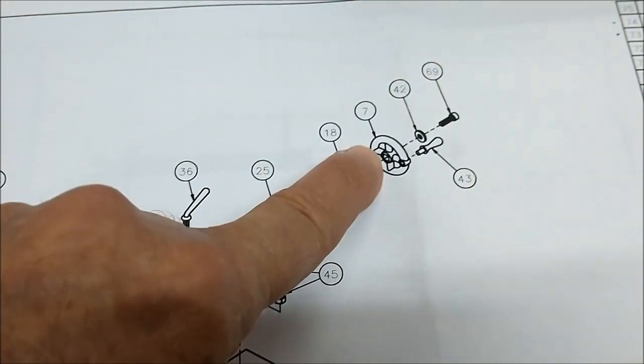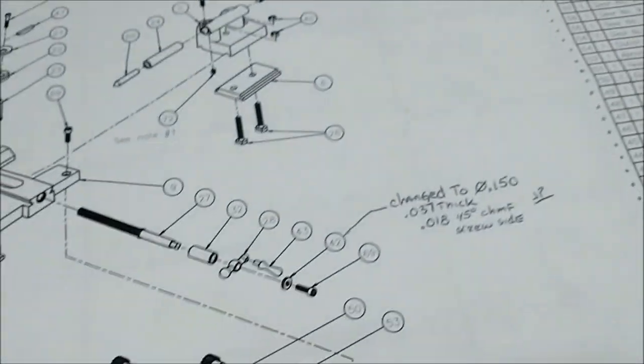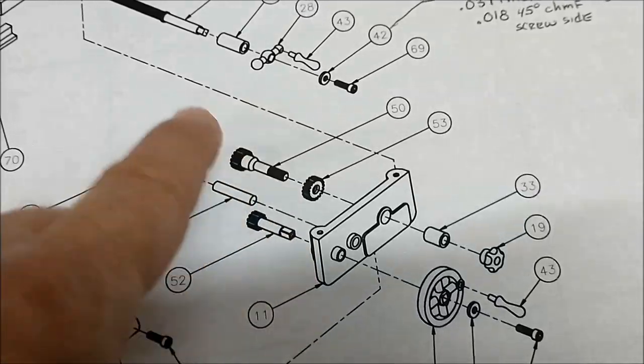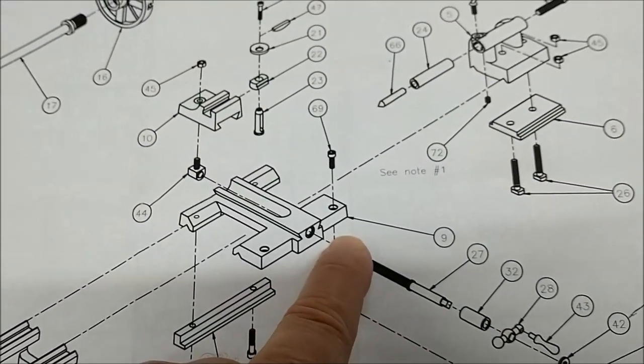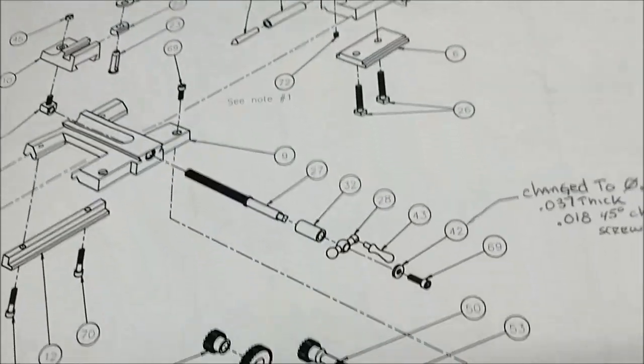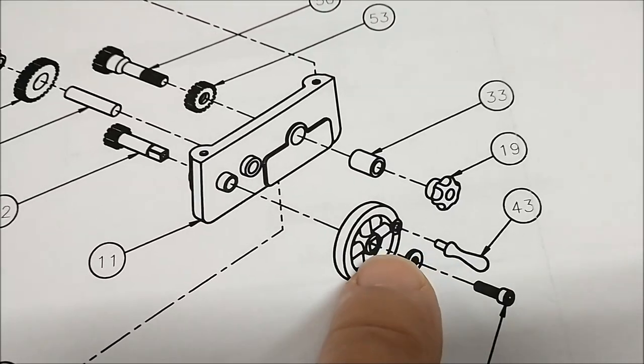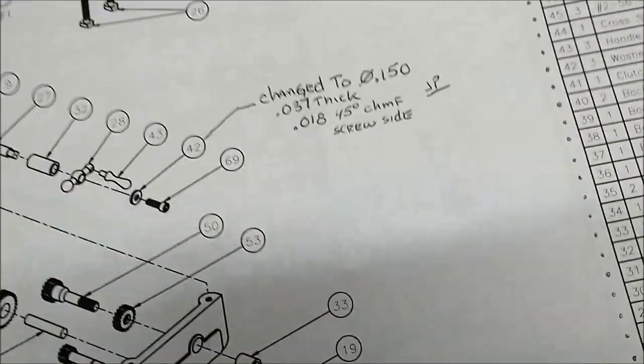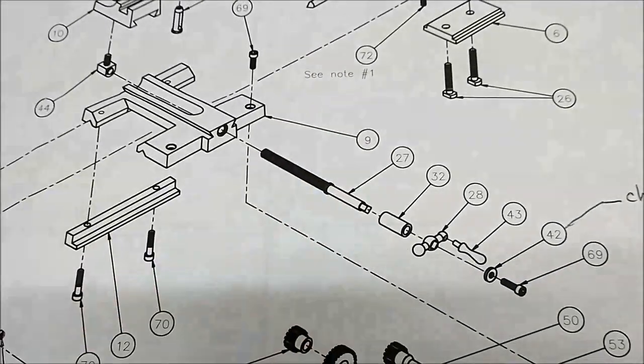The dial on the tailstock has the exact same square drive feature. The hand wheel on the carriage has the exact same square drive feature, and so does the lead screw for the cross slide.